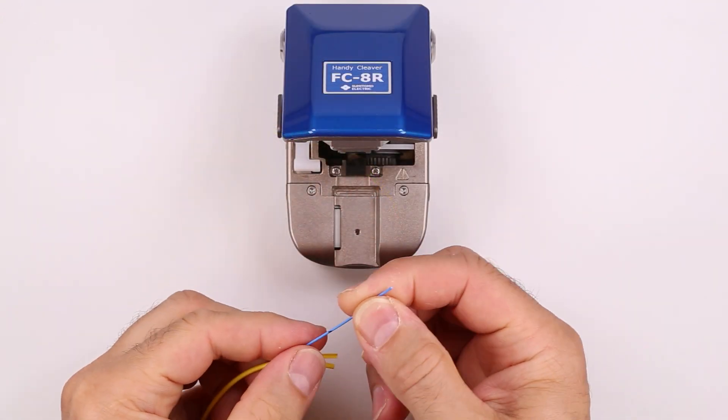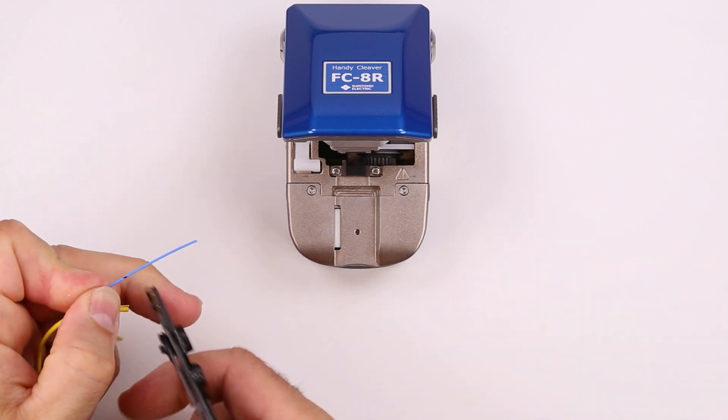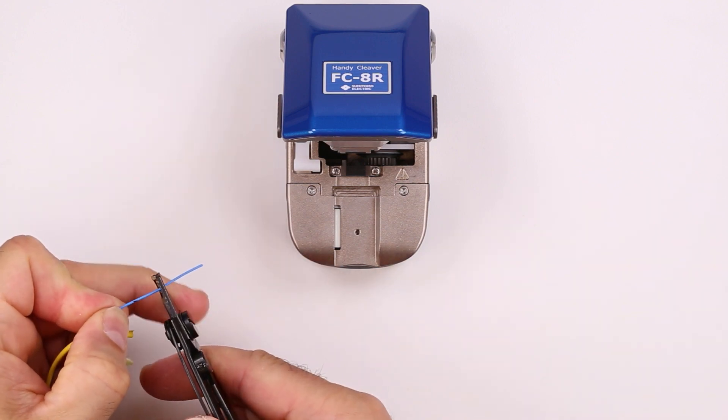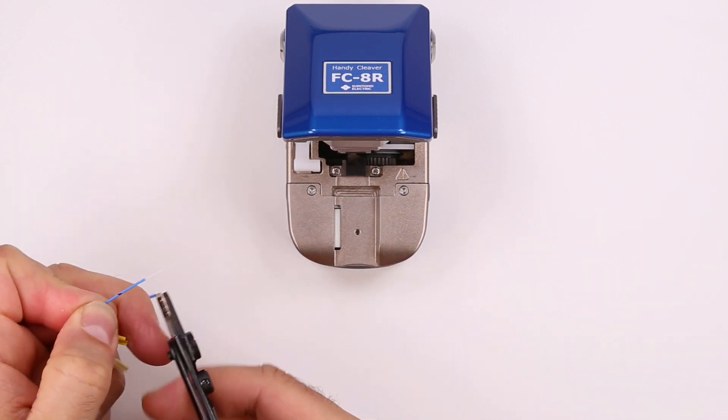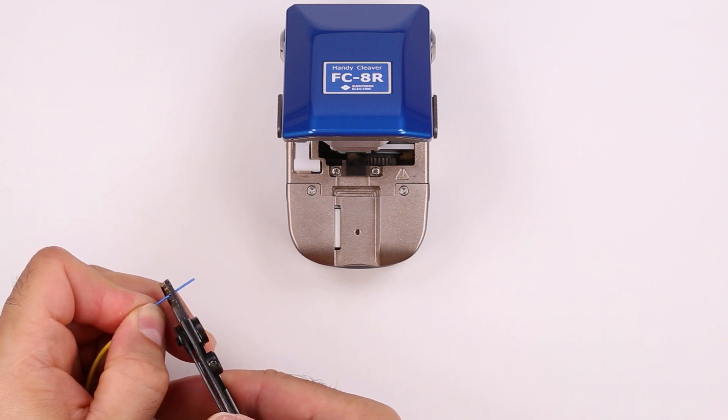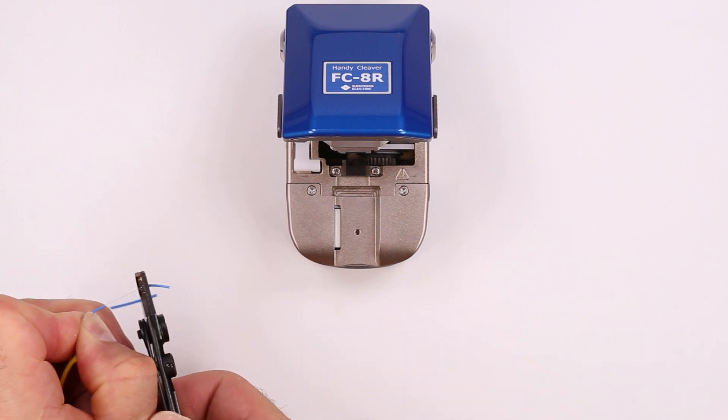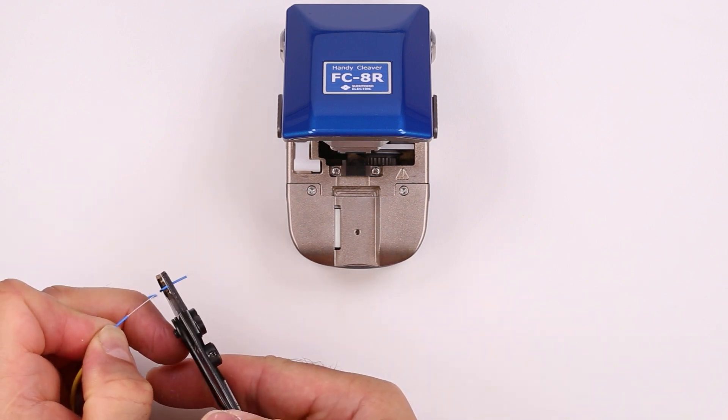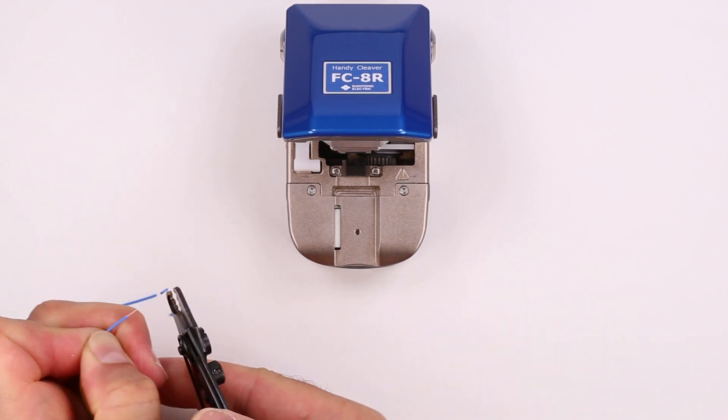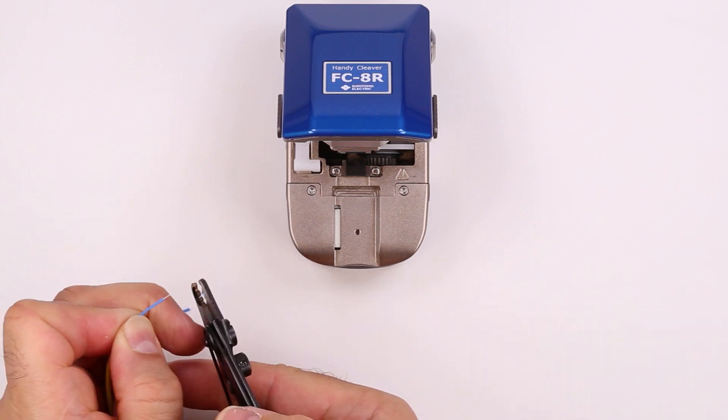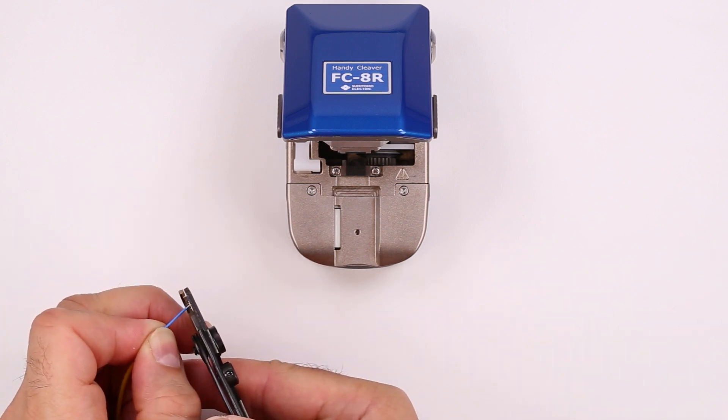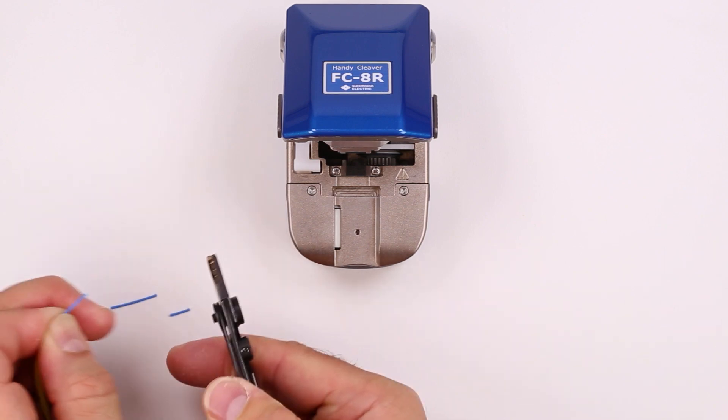Strip the 900 micron buffer up to and including the mark. Use the middle notch in the strippers with multiple passes to avoid breaking the fiber. Then strip the 250 micron primary coating using the notch closest to the handles.